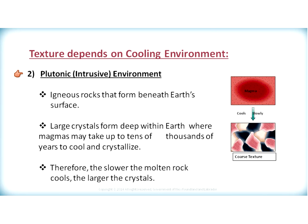In comparison, if we look at a plutonic or intrusive environment — an environment beneath the surface of the Earth, which could be kilometers to hundreds of kilometers depth — this environment has magma that will tend to cool at a slower rate, because the rest of the Earth insulates the magma. Igneous rocks that form beneath the Earth's surface are called plutonic rocks. We generally see large crystals forming deep within the Earth, where magmas may take tens of thousands or even millions of years to cool and crystallize.